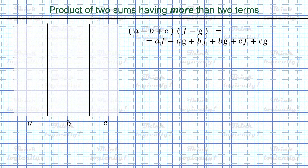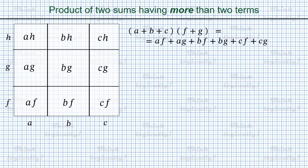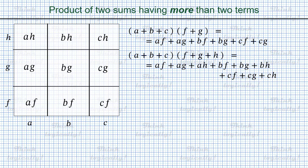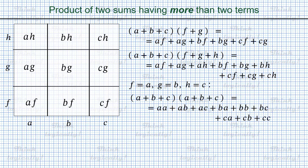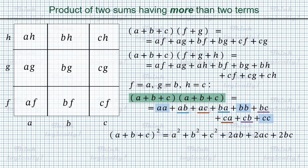In the case both sums have 3 terms, we get 9 rectangles and 9 terms in the right-hand side. In particular, if f equals a, g equals b, and h equals c, there are 3 squares and 3 pairs of equal rectangles, while the whole rectangle becomes a square of side a plus b plus c. This gives the formula for the square of 3 terms added up.